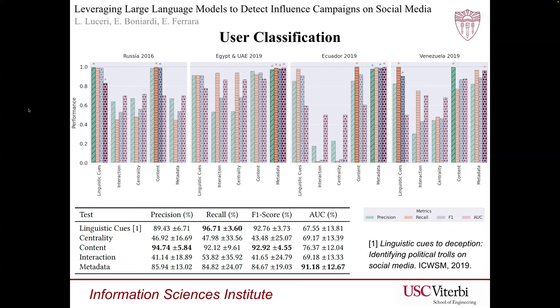There are a few noteworthy observations. First, among the proposed models, the content-based approach consistently demonstrates strong classification accuracy across various campaigns. Second, the metadata-based model also achieves promising classification results with the highest AUC among the evaluated approaches. Other models, however, show limited classification capabilities across campaigns.